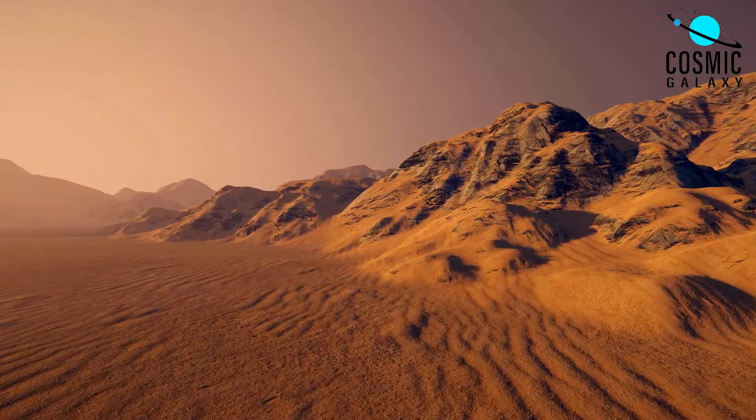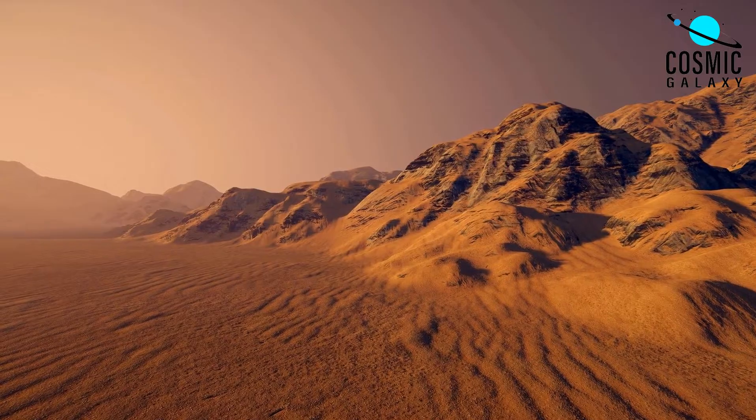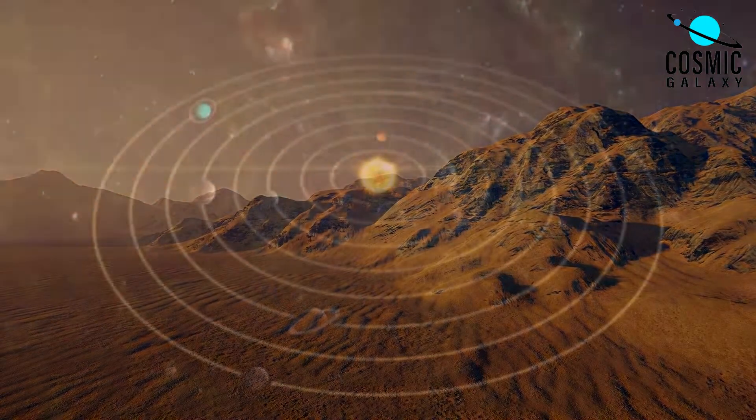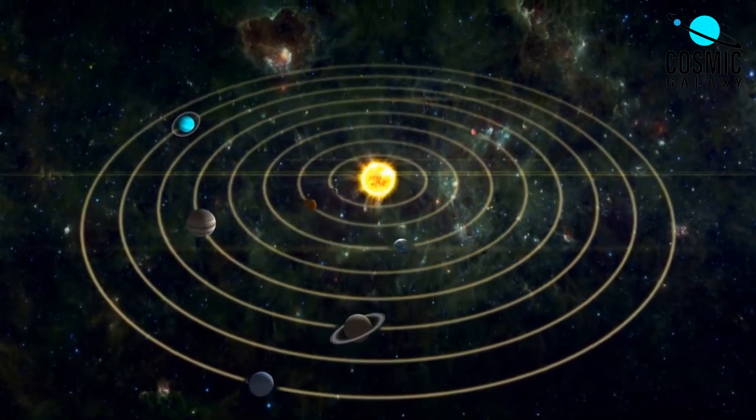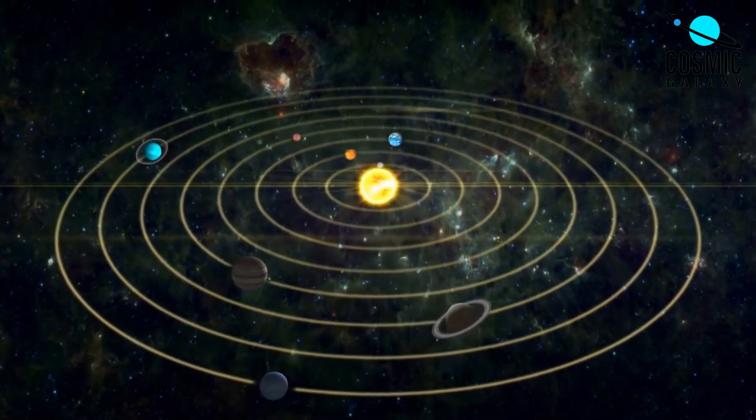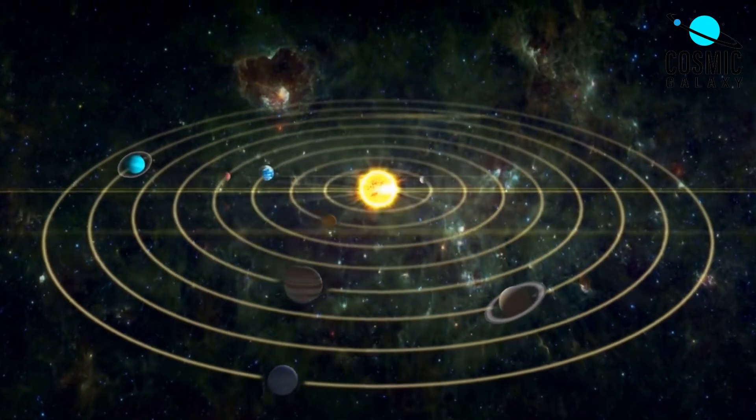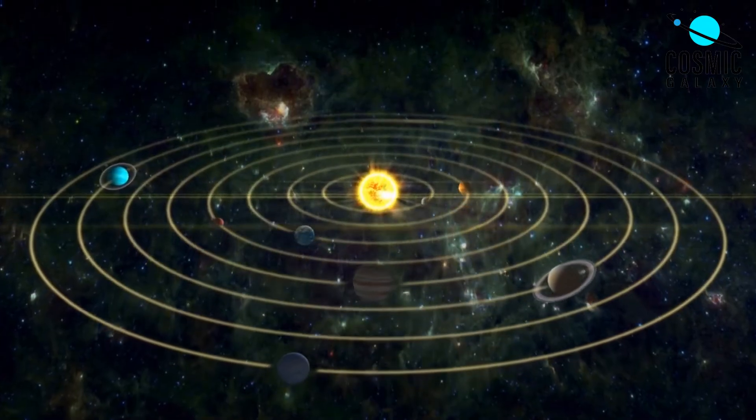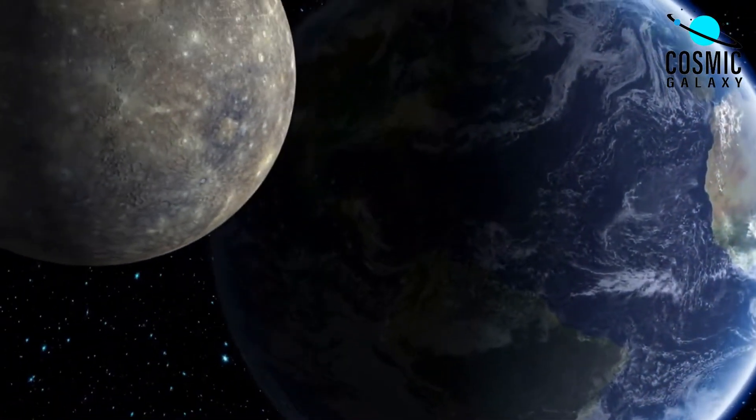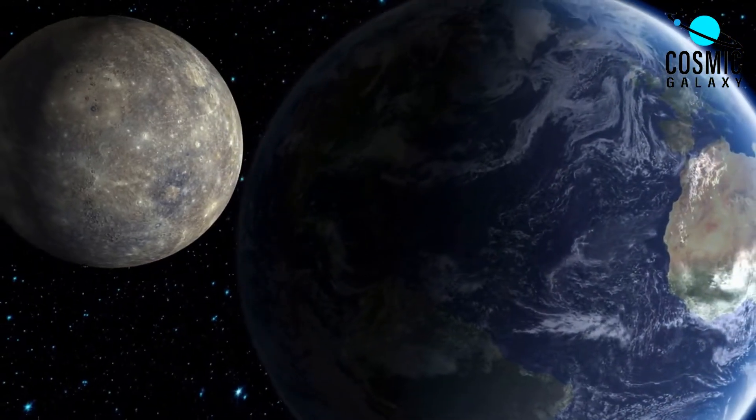The reason why the inner planets are rocky is due to a process known as planetary differentiation. During the formation of our solar system, the early solar nebula contained gas, dust, and debris that eventually collided and formed planetesimals. Over time, these planetesimals continued to collide and merge, creating larger and larger bodies.